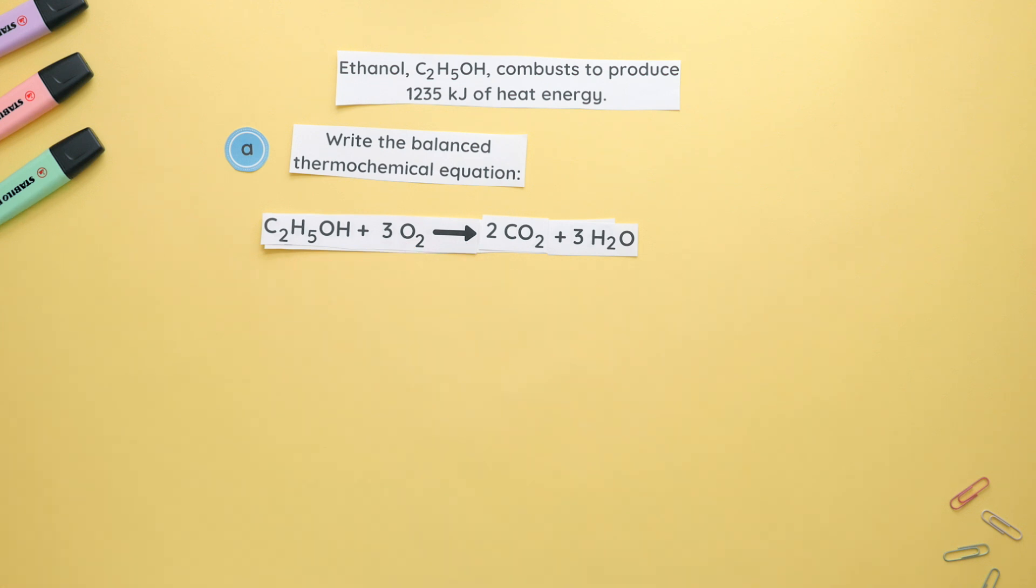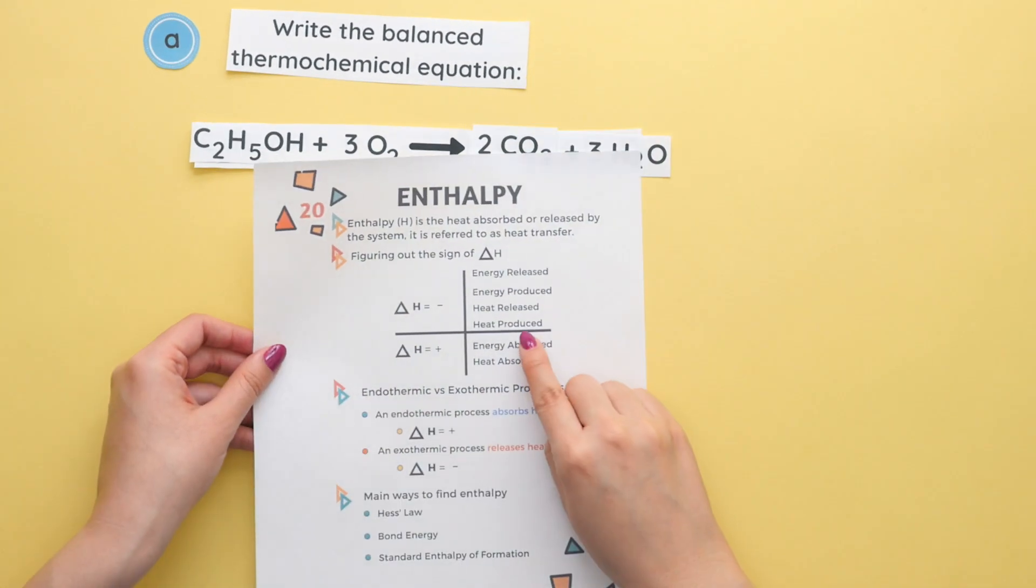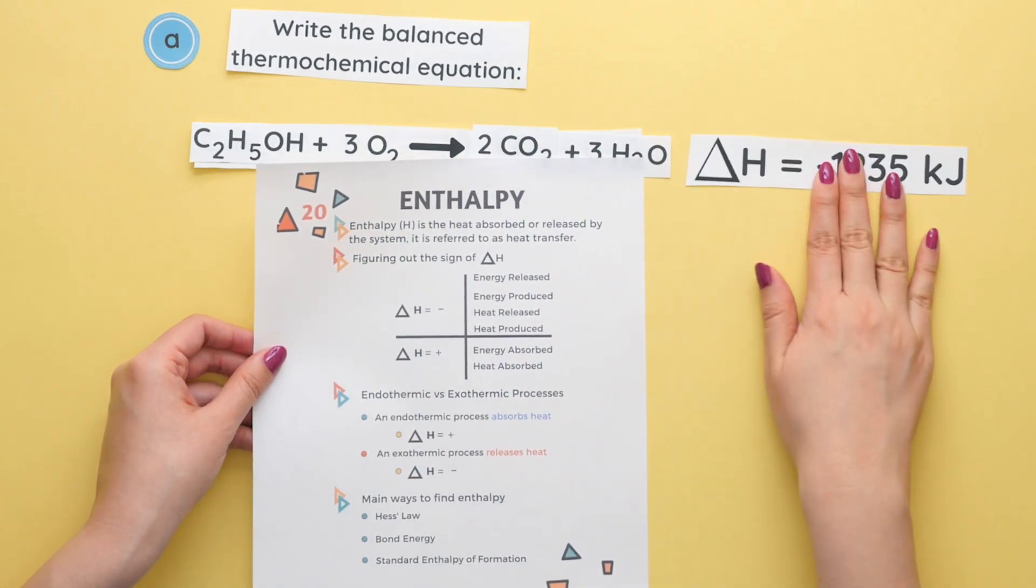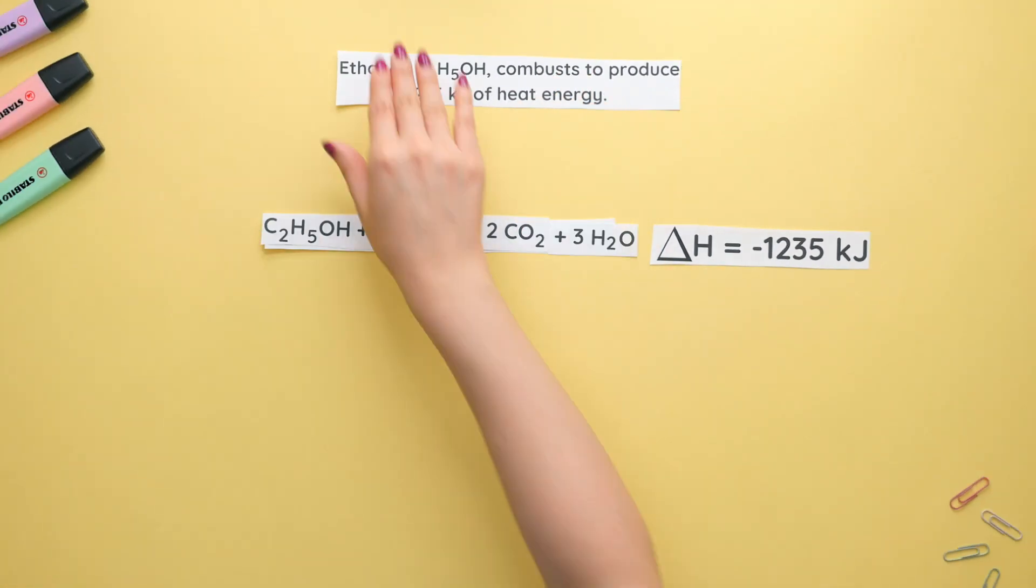Next, let's see what sign our enthalpy change is. Our key word is produce. If heat is produced, then our enthalpy change is negative. Now we'll use this for part B.